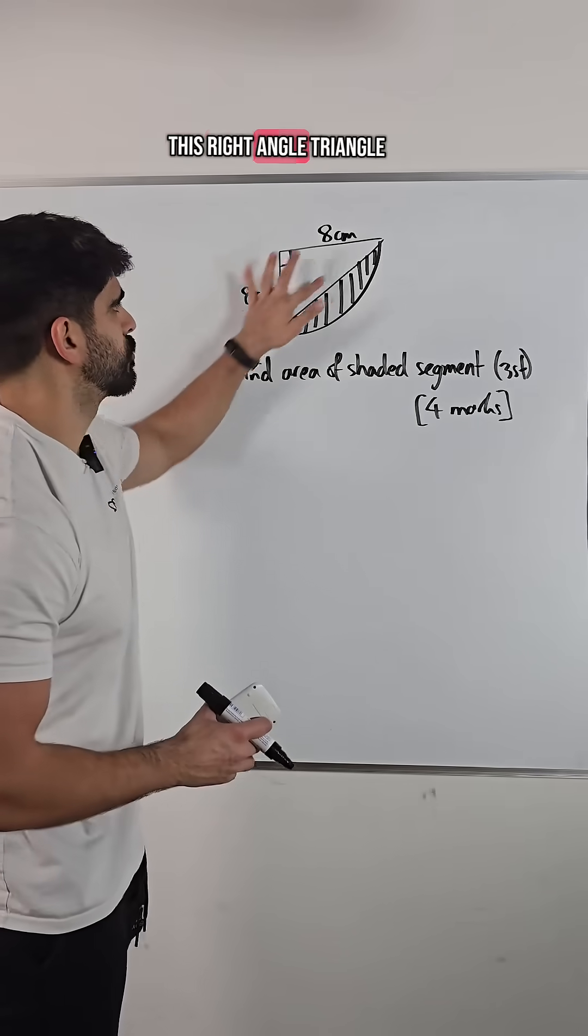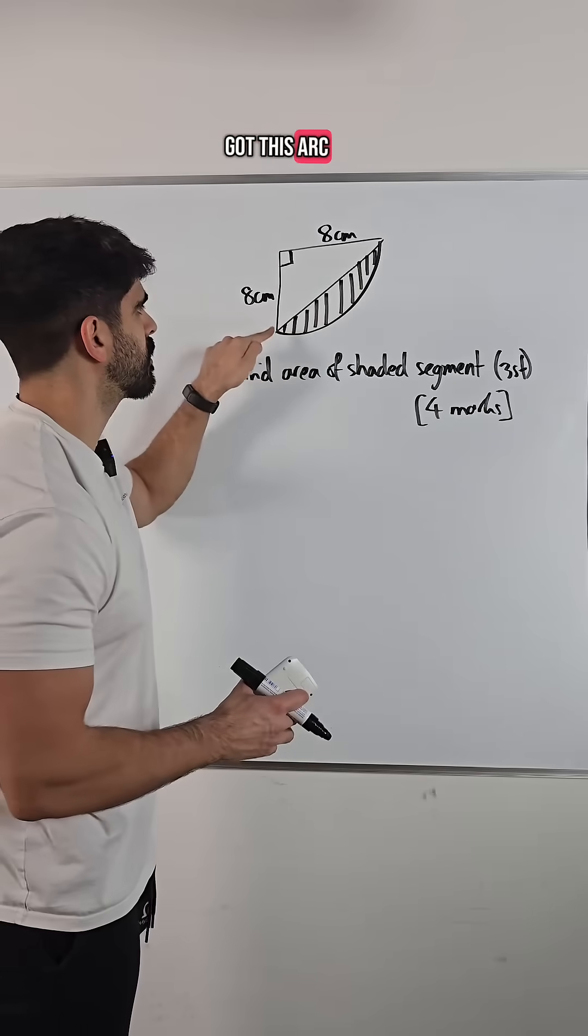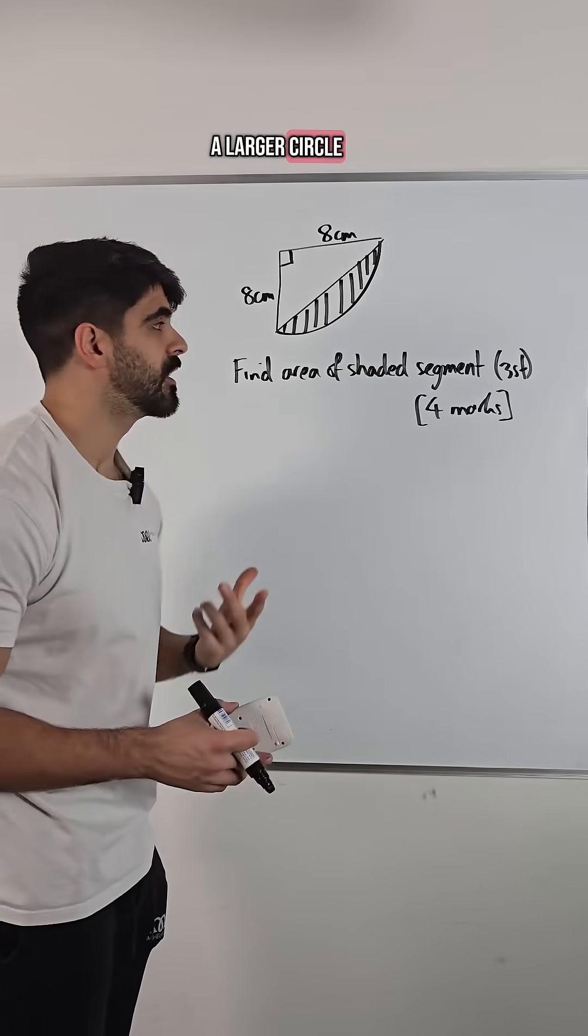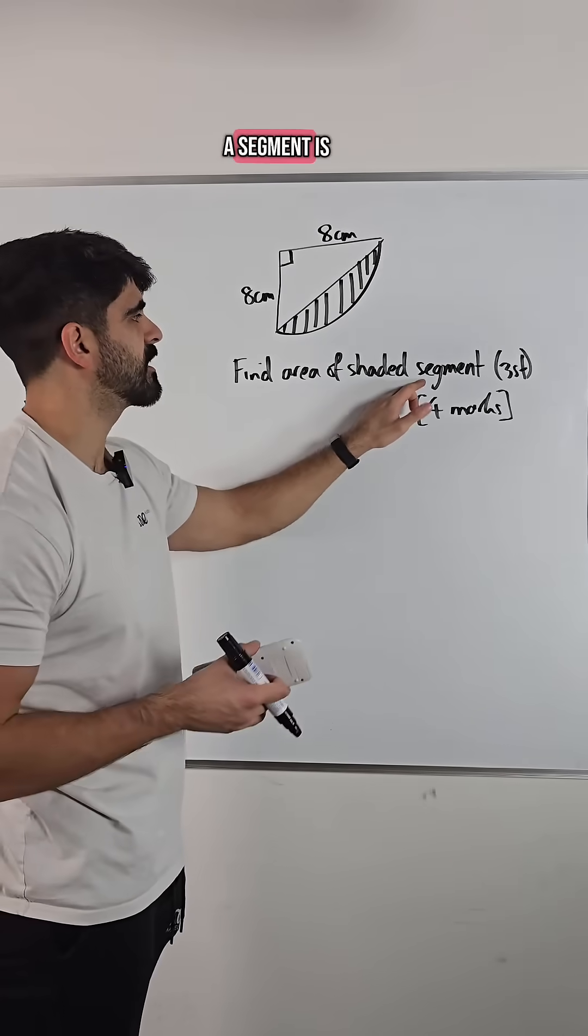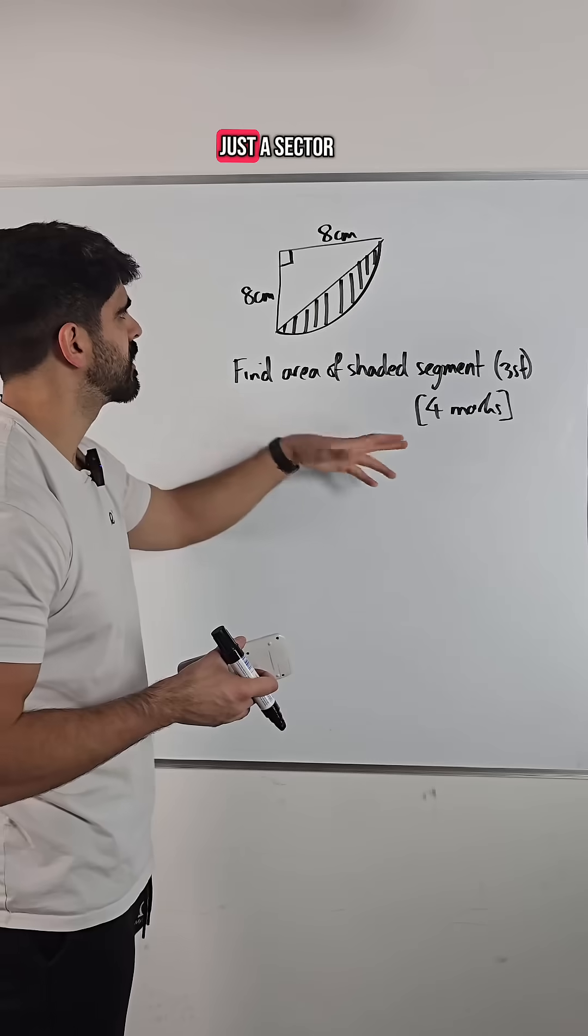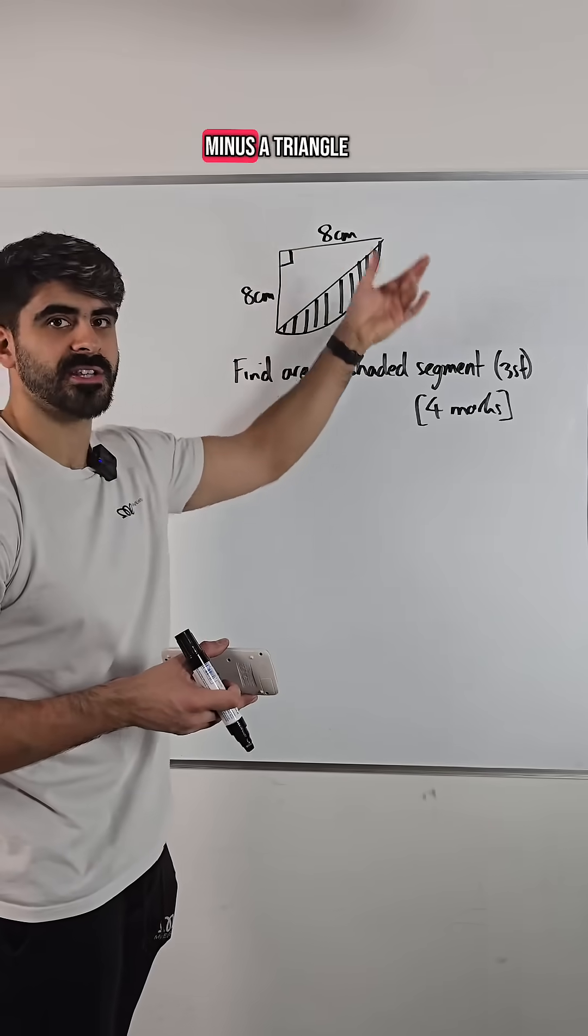So you've got this right-angled triangle, but then we've got this arc being part of a larger circle. All you need to know is that a segment is just a sector minus a triangle.